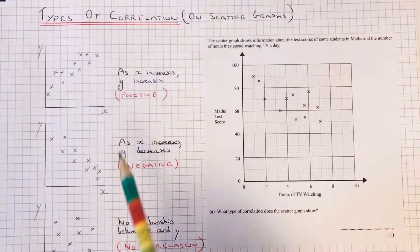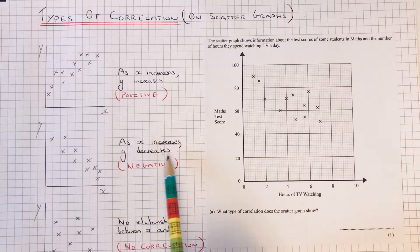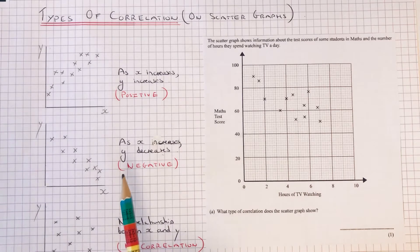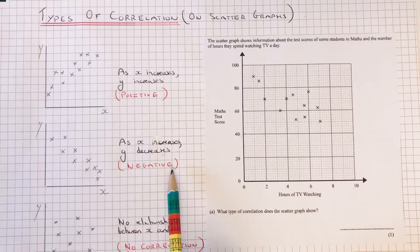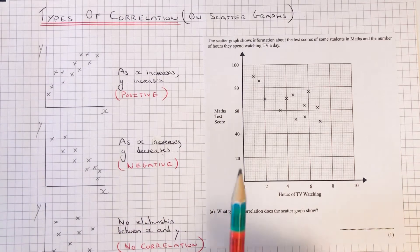The second one is if the points are going downwards from left to right across your page. This means as x increases, y decreases. This is known as negative correlation.